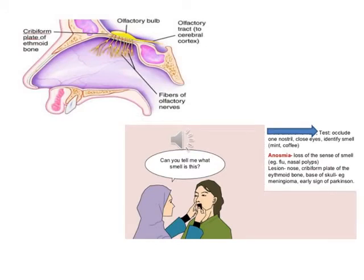The first cranial nerve is the olfactory nerve. As we see here, these are the fibers of the olfactory nerve crossing the cribriform plate, and this is the olfactory bulb and olfactory tract. When we examine the olfactory nerve, we ask the patient to close his eyes and then we examine each nostril separately using a non-irritating substance that must be familiar to the patient.